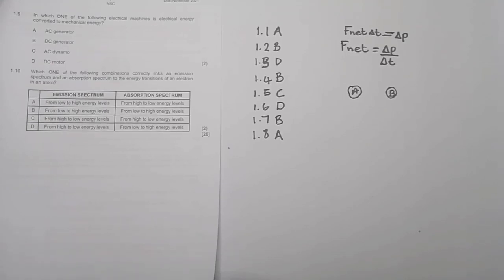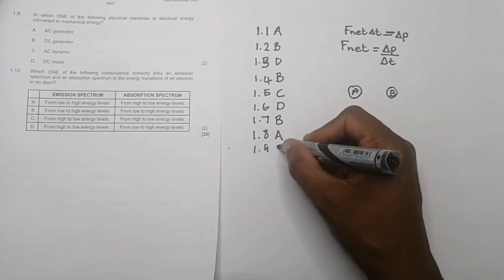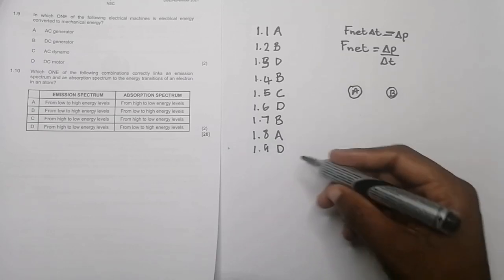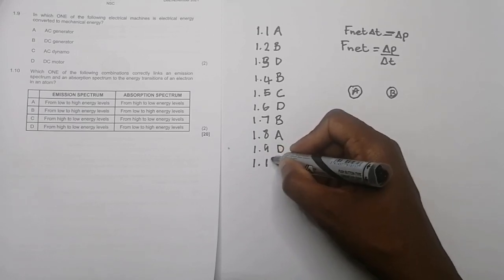Question 1.9. In which one of the following electrical machines is electrical energy converted to mechanical energy? What does that is a motor. A dynamo and a generator are all the same thing. So the correct answer at 1.9 will actually be D, which is DC motor.